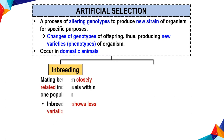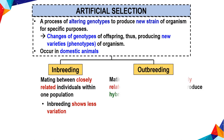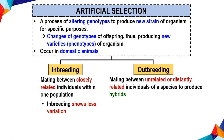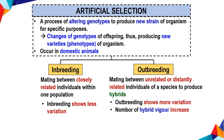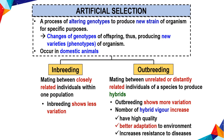In-breeding is mating between closely related individuals within one population. In-breeding shows less variation. Out-breeding is mating between unrelated or distantly related individuals of a species to produce hybrids. Out-breeding shows more variation, increases hybrid vigor, produces high quality offspring, better adaptation to the environment, and increased resistance to disease.